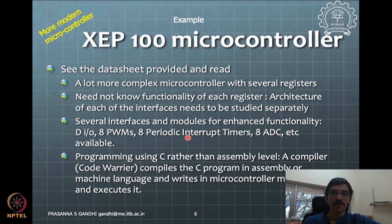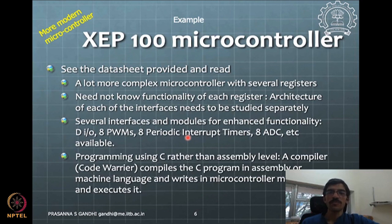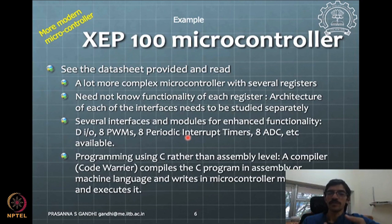Moving to more modern microcontrollers — if you see the data sheet it will be a lot more complex compared to the 8085, with many many different registers. In fact for each interface there will be a different architectural block diagram. As a user you need not know the functionality of each register. What we need to understand is, from a programming perspective, how I can make use of the information given as part of the architecture.